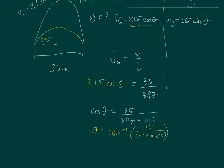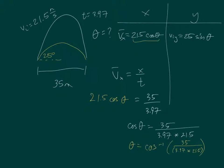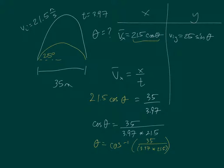That will give you theta for part A. Part B is the tricky one — it has to do with the lower trajectory. It asks for the initial speed and time of flight. The second part asks for initial speed and time of flight given that theta is now 25 degrees.